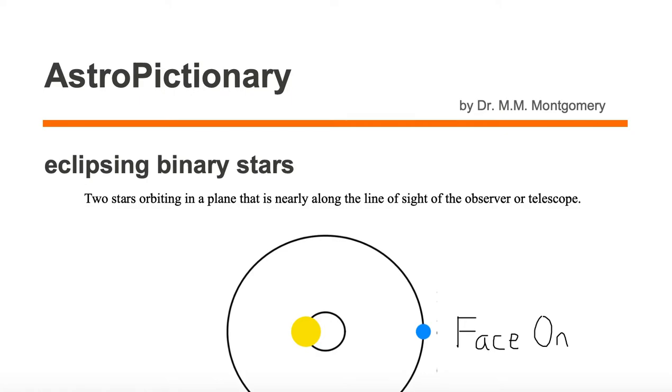Eclipsing binary stars are two stars orbiting in a plane that is nearly along the line of sight of the observer or telescope.